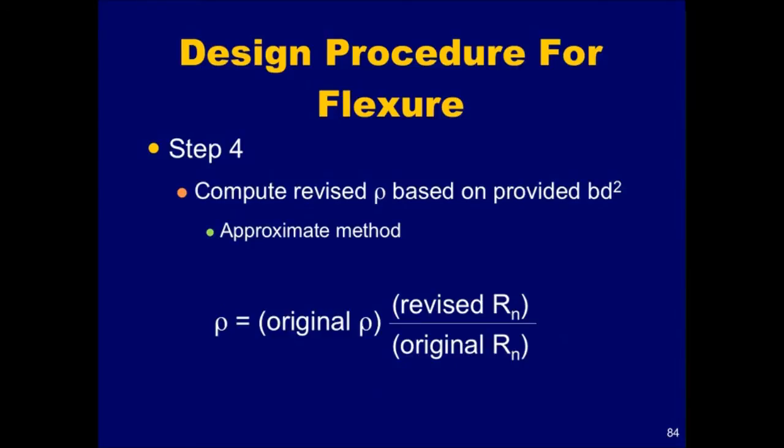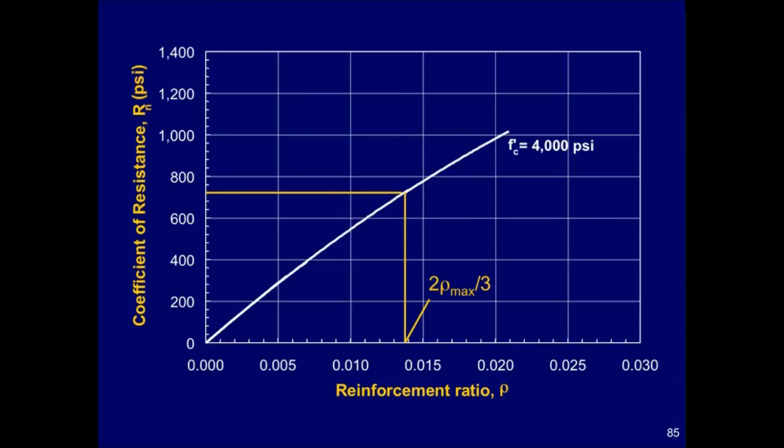In lieu of the exact method, an approximate method can be used to determine the revised value of rho. The revised rho is determined by multiplying the original rho times the ratio of the revised and original values of R sub n. Recall from our earlier discussion that the relationship between R sub n and rho is approximately linear up to about two-thirds of the maximum reinforcement ratio. Thus, in most cases, a revised rho can be accurately determined by proportion.